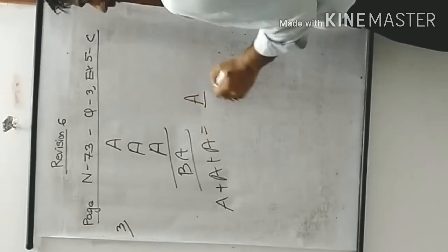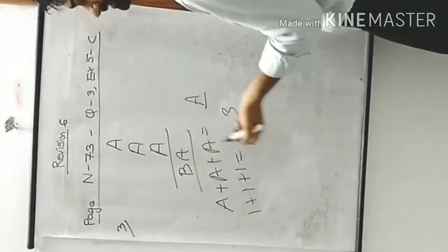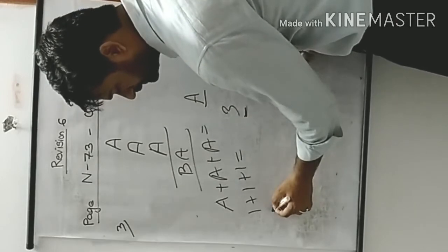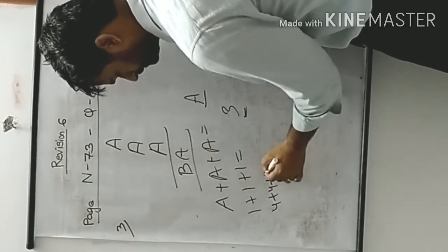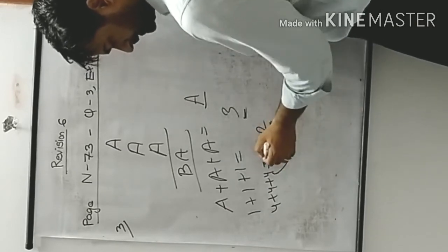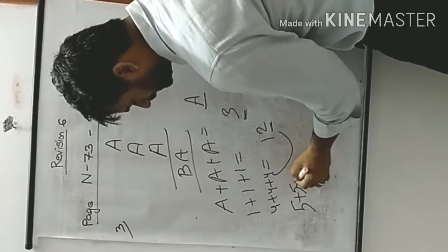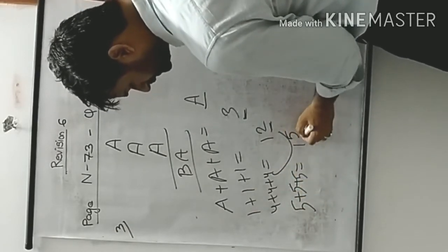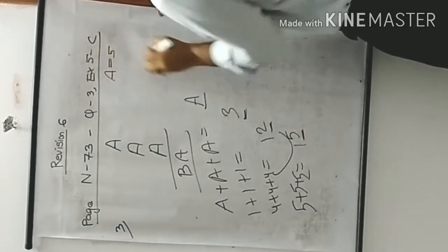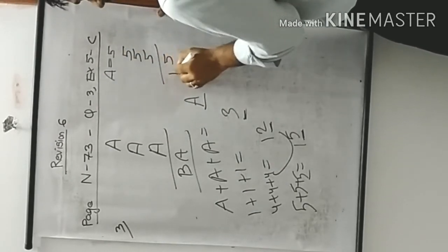Checking: 1+1+1=3 — units digit is 3, not 1. Try 4: 4+4+4=12 — units digit is 2, not 4. Try 5: 5+5+5=15 — units digit is 5. So A=5 works.